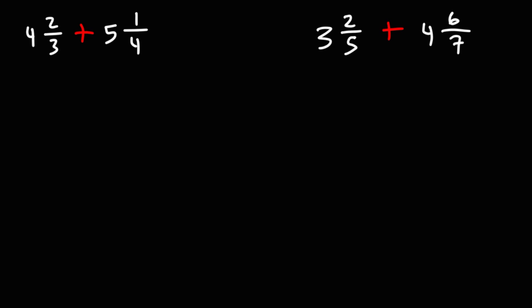In today's lesson, we're going to talk about how to add mixed numbers. So we have 4 and 2 thirds plus 5 and 1 fourths. 4 and 2 thirds, we can write that as 4 plus 2 over 3. And 5 and 1 fourths, we can write that as 5 plus 1 over 4.